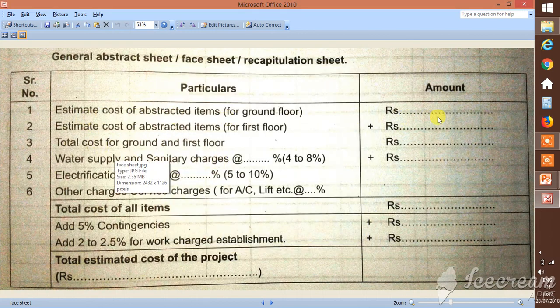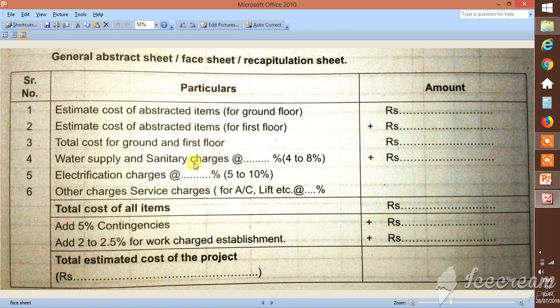Estimated cost of the abstract items - ground floor, first floor - then total cost of these. Then we are going to add the 4 to 8% water supply and sanitary charges, electrification 5 to 10%, and other charges if any there for AC and lifts, etc.